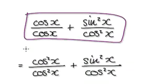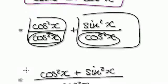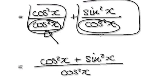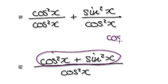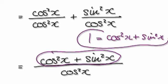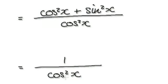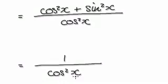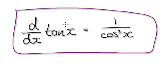Now we want to merge these two fractions together. Multiply the top and bottom of the first fraction by cos of x so that both denominators become cos squared of x. Now that the denominators are the same, we can merge them: the numerator becomes cos squared of x plus sine squared of x, all over cos squared of x. Remember that cos squared of x plus sine squared of x equals 1 — you need to have this ingrained in your mind. So the numerator is just 1, meaning the derivative of tan of x is 1 over cos squared of x.